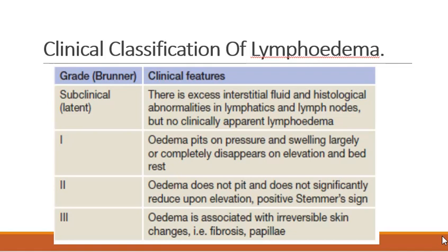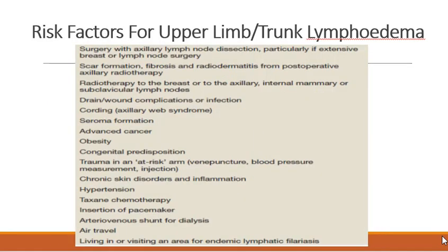In grade 1 there is pitting edema; if the limb is elevated with bed rest, the swelling largely or completely disappears. In grade 2, it is non-pitting edema with no reduction in swelling upon elevation, and a positive Stemmer sign. In grade 3, edema is associated with irreversible skin changes — fibrosis and papillary formations.